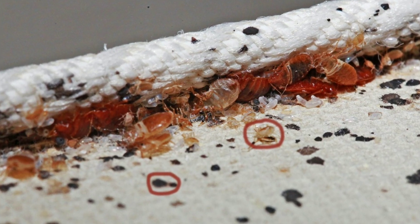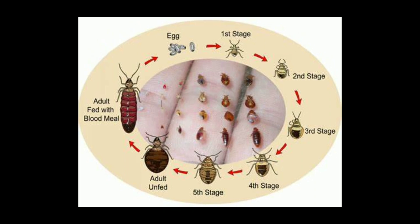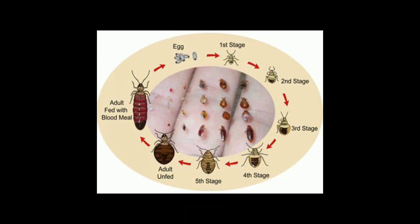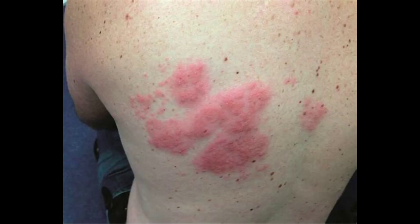Here are the stages in the bedbug life cycle: eggs, nymphs, adults, feeding, and reproduction.